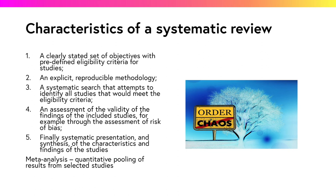Irrespective of the research question, a systematic review has the following five main characteristics: 1. A clearly stated set of objectives with predefined eligibility criteria for studies. 2. An explicit, reproducible methodology. 3. A systematic search that attempts to identify all studies that would meet the eligibility criteria. 4. An assessment of the validity of the findings of the included studies, for example through the assessment of risk of bias. 5. Finally, systematic presentation and synthesis of the characteristics and findings of the studies.